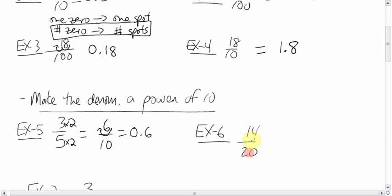How about this? 14/20. How can we make 20 a power of ten? When I say a power of ten, it could be ten or it could be a hundred or a thousand. We could make this 10 by dividing by 2. Do the same to the top. When you divide 20 by 2, you get 10. 14 divided by 2 is 7. Well, now it's easy. One zero, one spot. The answer is 0.7.